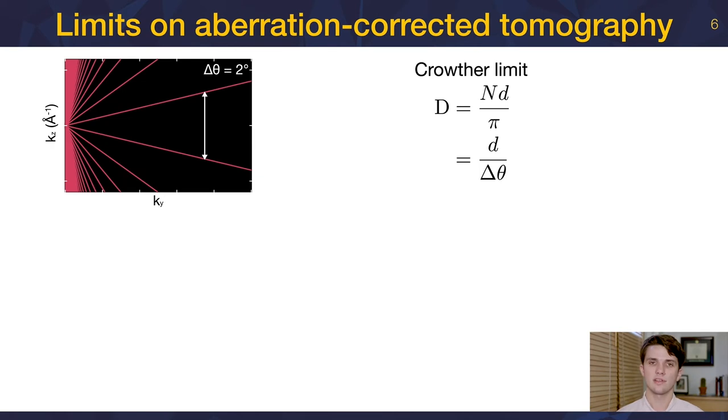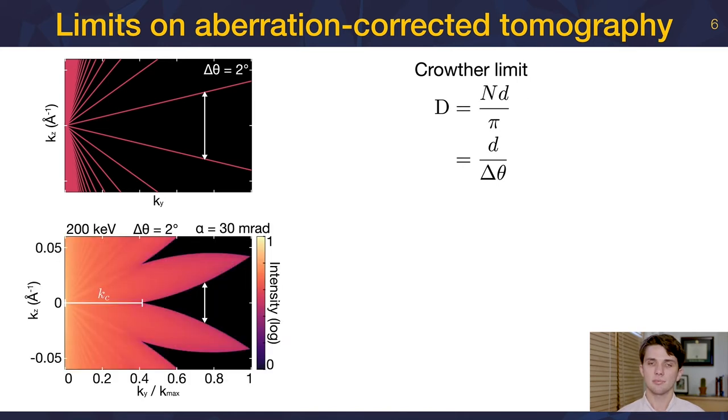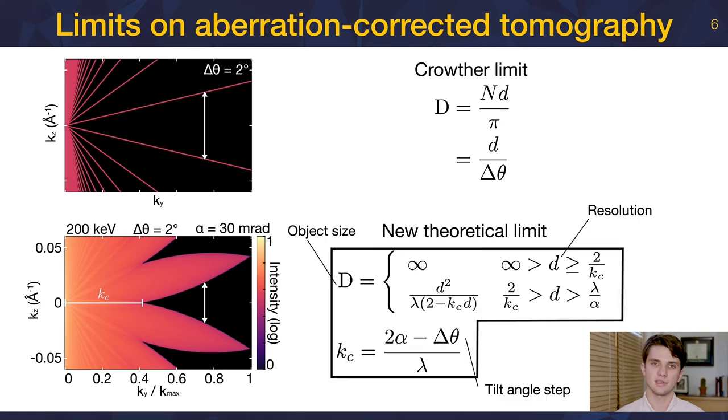Once again, traditional tomography is governed by a series of planes in frequency space, and is governed by the linear Crowther criterion. With aberration correction, each plane is replaced with a volumetric CTF. So now we have two distinct regions. The overlap portion below the critical frequency, and the non-overlap portion above the critical frequency. As a result, we're going to define our new limit piecewise. In the region below the critical frequency, the complete structure of the object is measured, meaning that the effective distance between adjacent planes is infinitesimal. This means that the maximum object size should be unbounded. Above the critical frequency, we can write down an expression for the distance between adjacent CTFs. This can be related to the maximum object size, similar to Crowther's derivation. This piecewise expression is the new relationship between resolution, object size, and sampling for aberration-corrected electron tomography, analogous to Crowther's criterion.